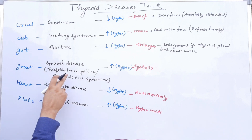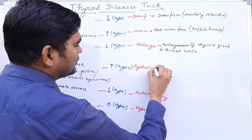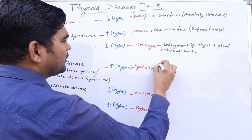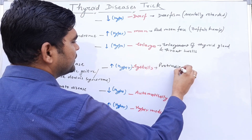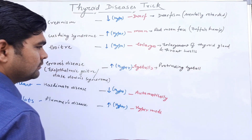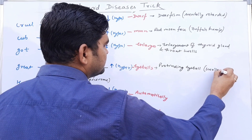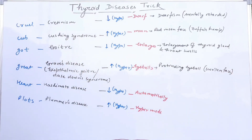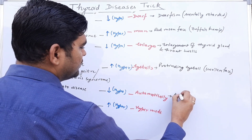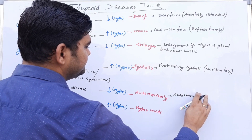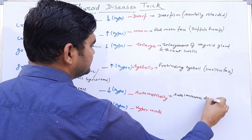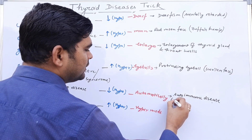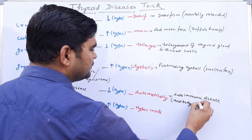Graves disease, also called Exophthalmic disease and Days Down disease, is characterized by protruding eyeballs — the eyeball comes out of its normal size and appears bigger due to the accumulation of water — along with a swollen face. Hashimoto disease is an autoimmune disease in which the antibody destroys its own gland.